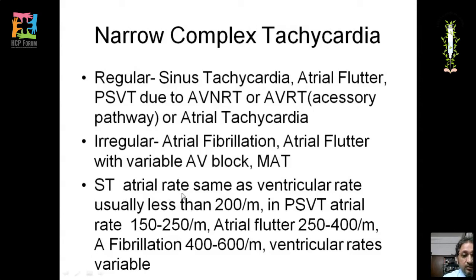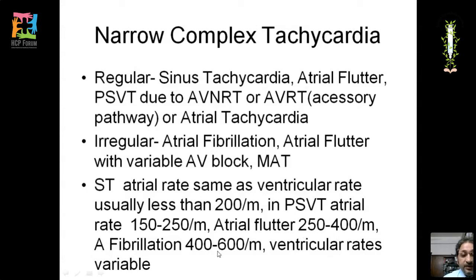Atrial rates: in sinus tachycardia, atrial and ventricular rates are equal and below 200. In PSVT, atrial rate is 150 to 250. In atrial flutter, 250 to 400. In atrial fibrillation, 400 to 600 — meaning not all impulses are conducted due to AV nodal refractoriness, resulting in variable ventricular rate.